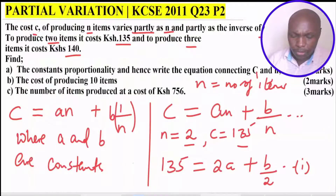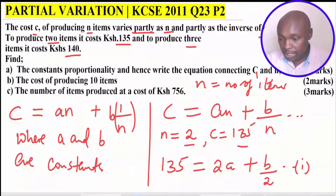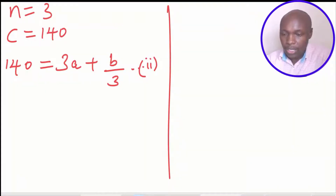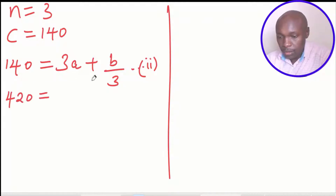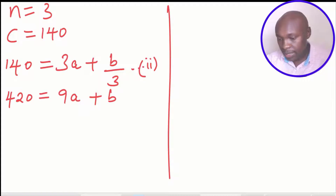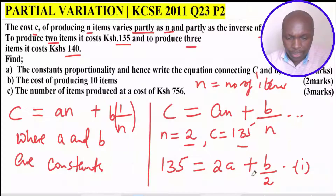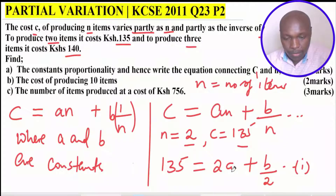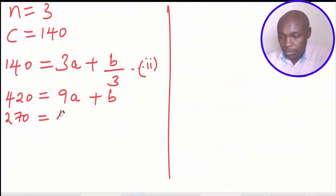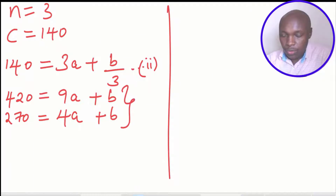Now we have two equations to solve simultaneously to find the constants of proportionality. The first equation is 135 equals 2A plus B over 2. To eliminate the denominator of 3, we multiply each term of the second equation by 3: 140 times 3 gives 420 equals 9A plus B. Then multiplying the first equation by 2 to eliminate its denominator: 135 times 2 gives 270 equals 4A plus B.